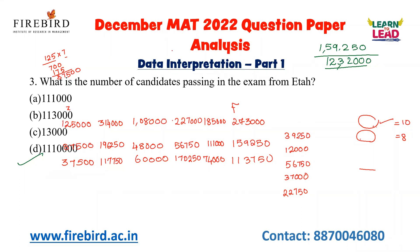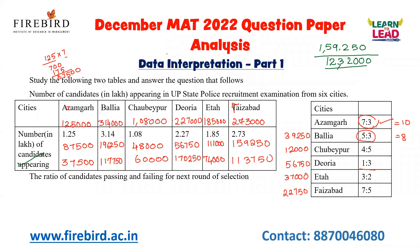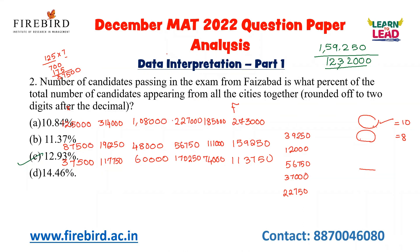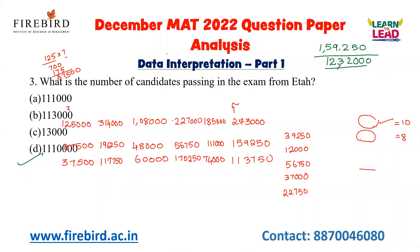The next question asks for the total number of candidates passing in the exam from ETA. Referring to the table, the total number of candidates passing from ETA is 74,000. The first option is your answer for this question.